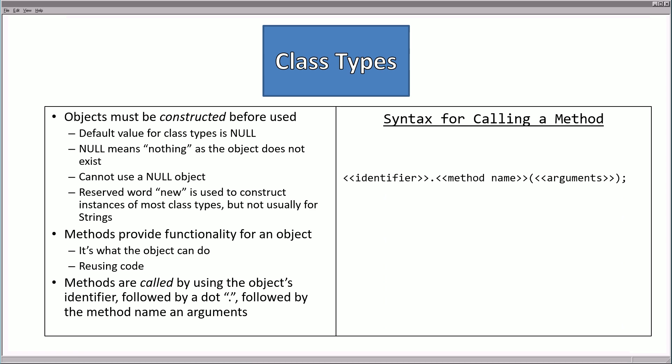Once again, classes create instances that we call objects. Objects must be constructed before they are ever used. Java assumes default values. In this case, the default value for an object is NULL. NULL means nothing — it means the object currently does not exist inside the computer. We cannot use an object that doesn't exist.